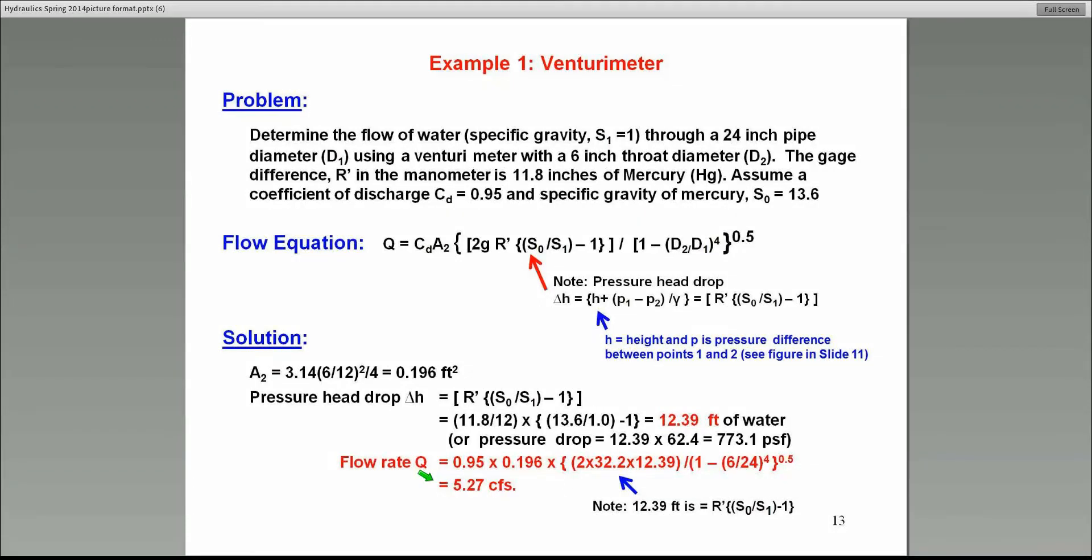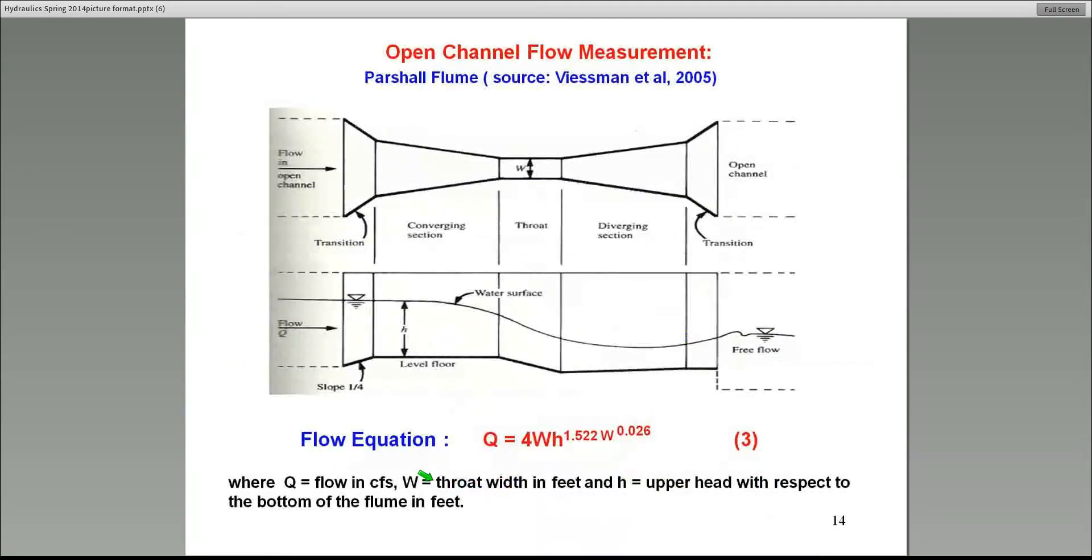So the primary purpose of venturi meters is to measure the discharge. And I will try to go as slow as I can. If I'm going a little fast, please let me know. The next thing we'll talk about is the flow measurement in open channel systems. Just like venturi meters and orifice meters in pipes, we have similar devices for open channel flow systems. It's called a Parshall flume. And all I'm going to show you is the rating equation here for a Parshall flume. The idea in this case is similar to the venturi meter.